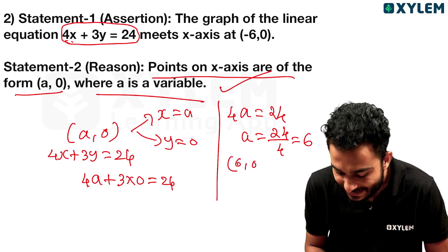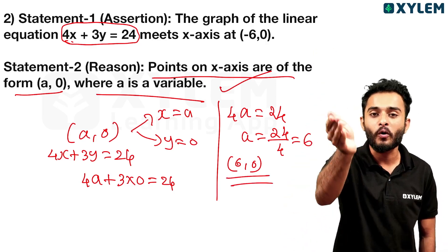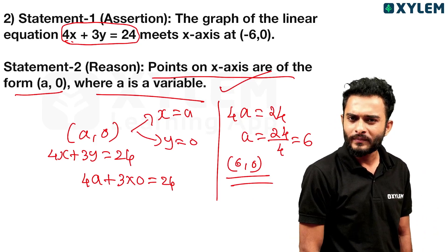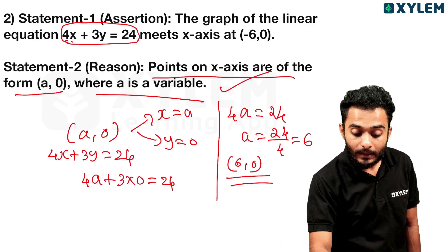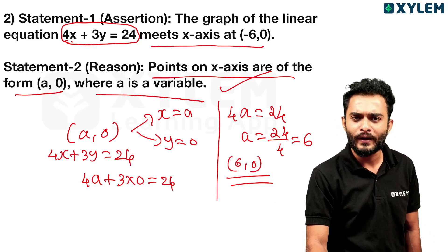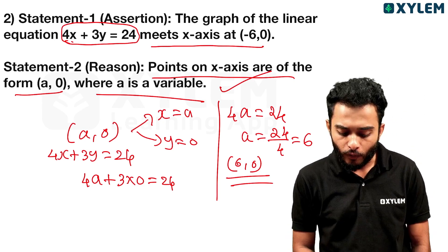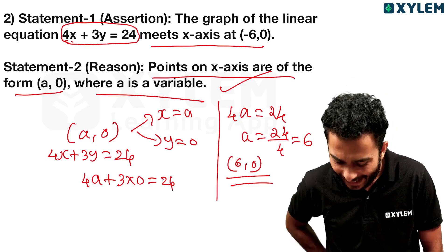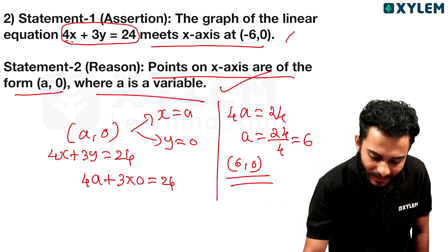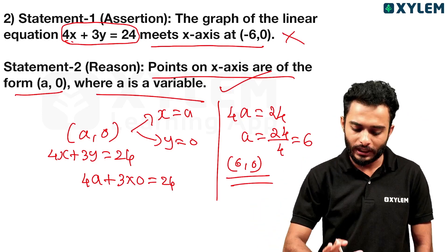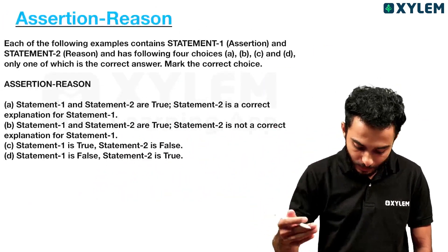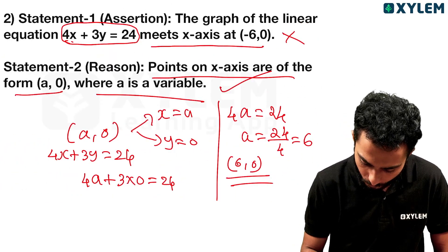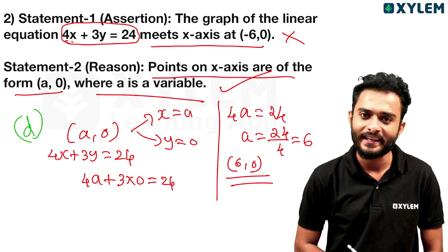The point (a, 0) gives a = 6, so the line meets the x-axis at (6, 0). The question says it meets at (-6, 0), which is false. So Statement 1 is false. Therefore the option is D.